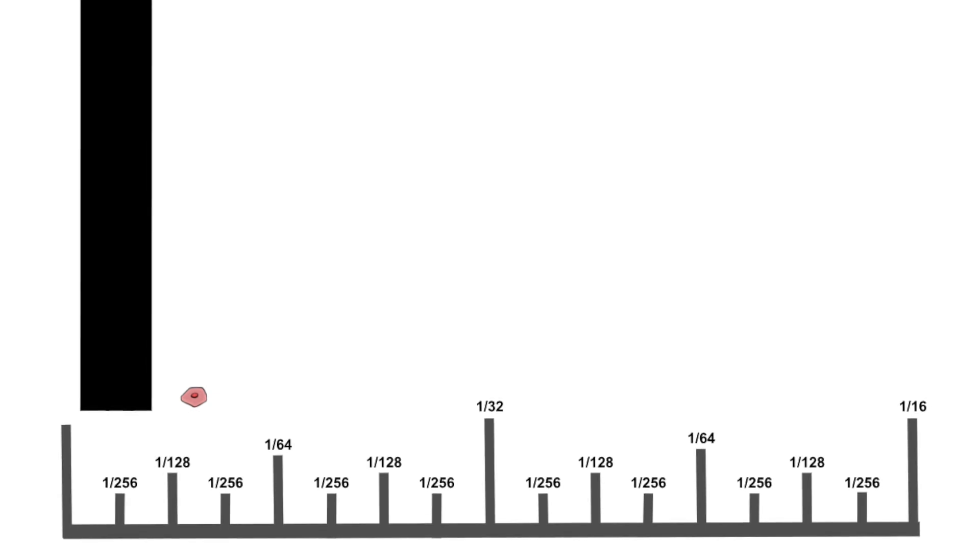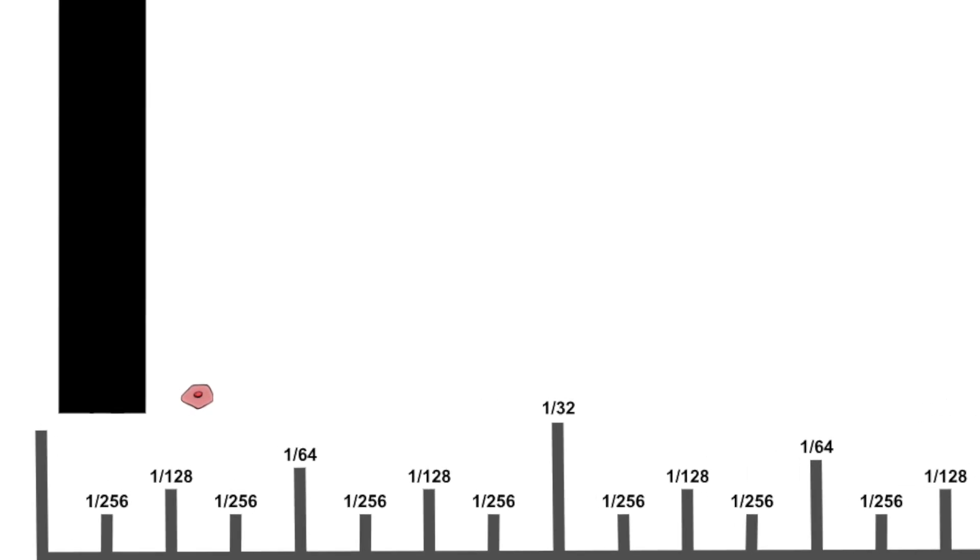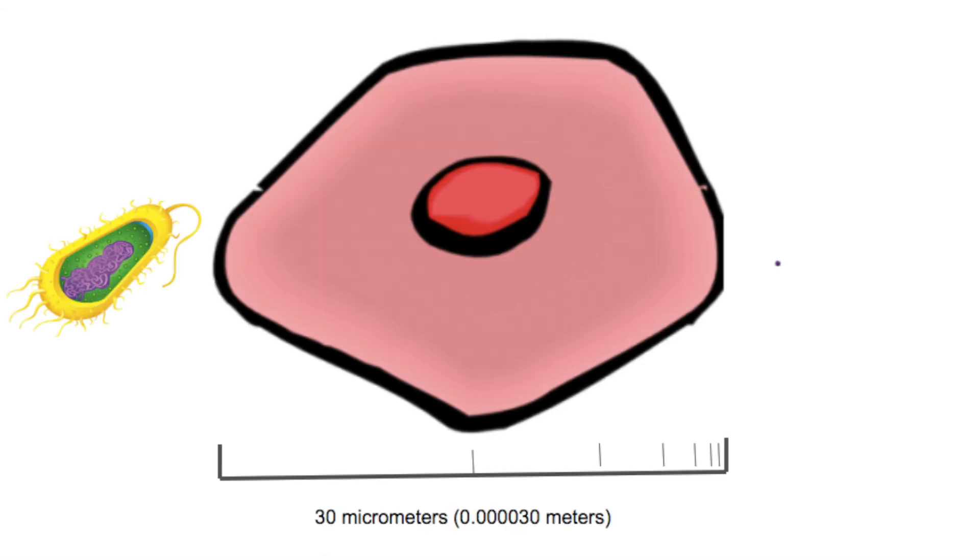But since we can't see them, here's a picture of what they really look like. Okay, now it's time to zoom even further. Looking close up at the skin cell, we can now see a bacterium on the left. These are the annoying little cells that get into your body and cause all sorts of terrible diseases like salmonella and tetanus.